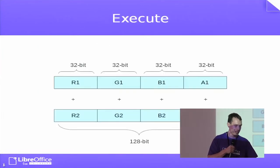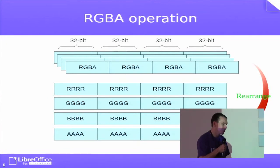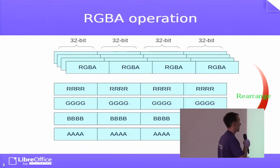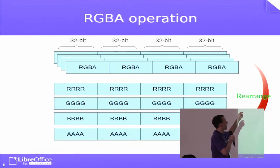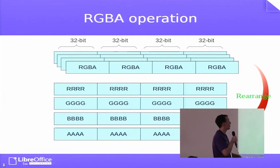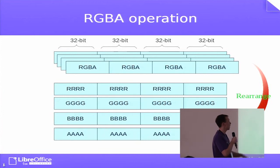There's another way to do it — not so useful, but another approach. You can load four 32-bit values at the same time and rearrange them so that you have each color value in each register, and then do operations on top of that.